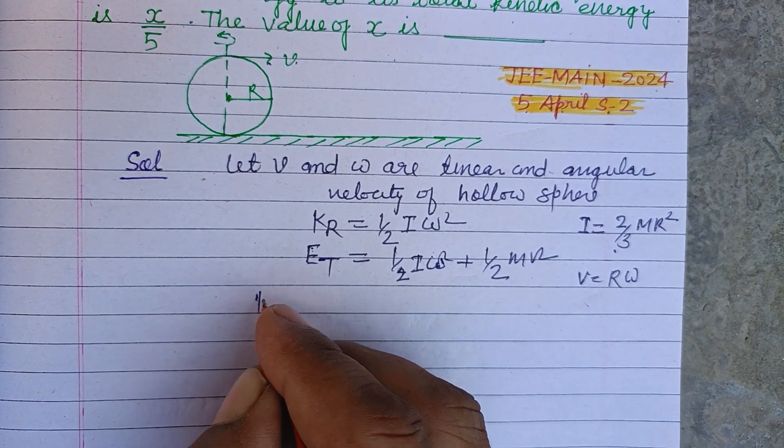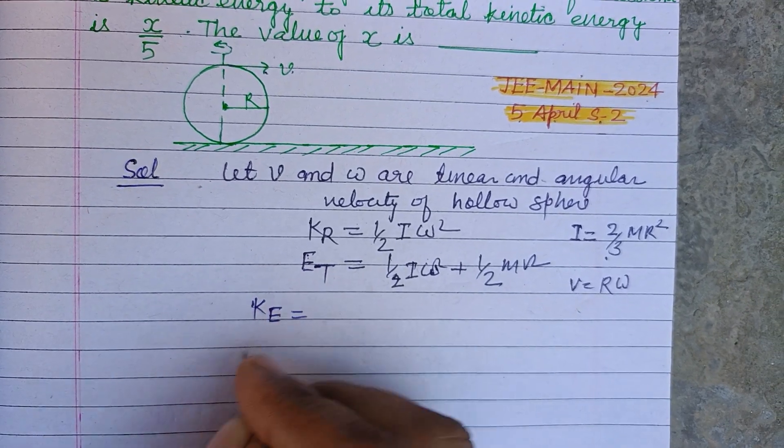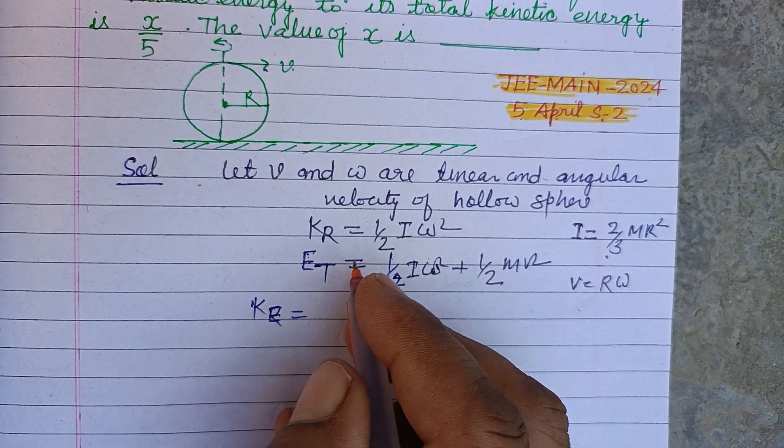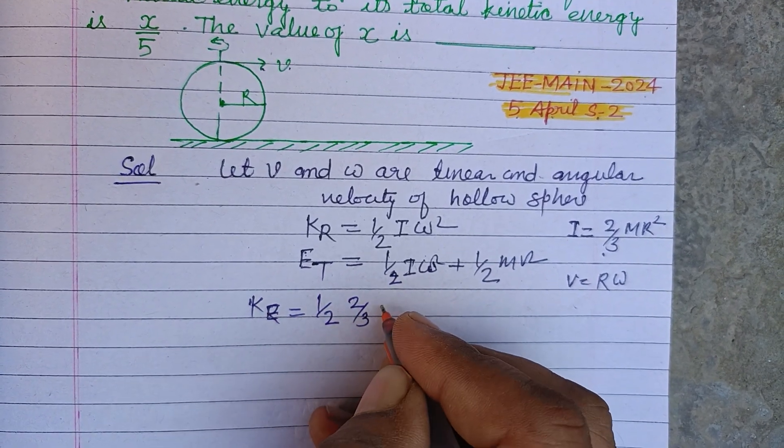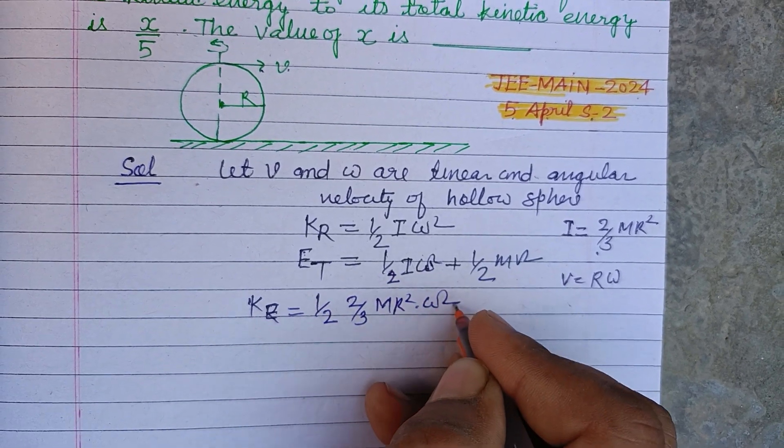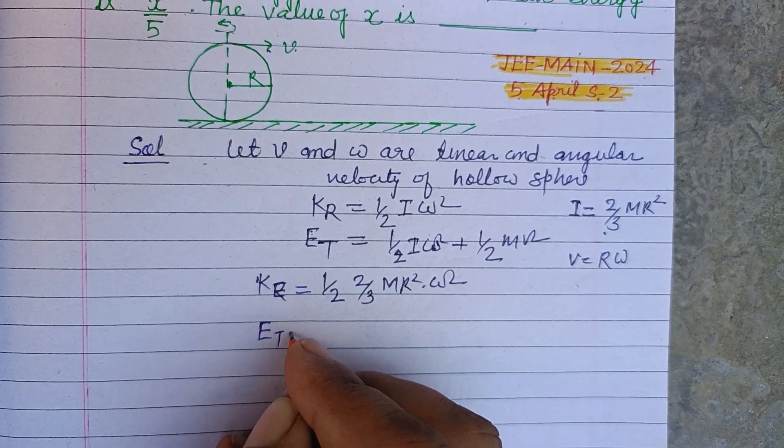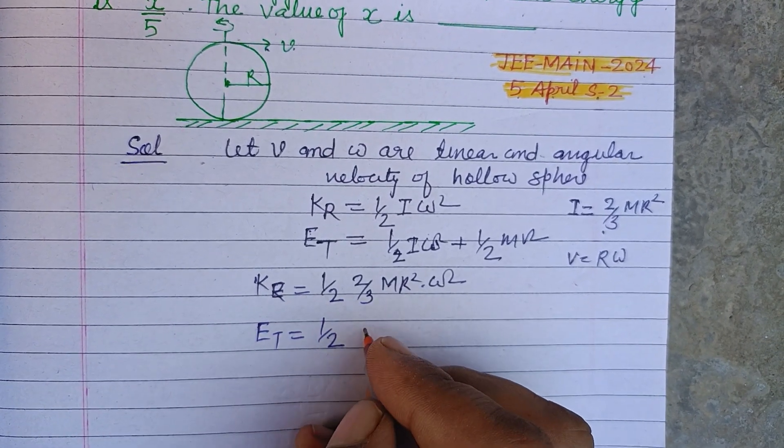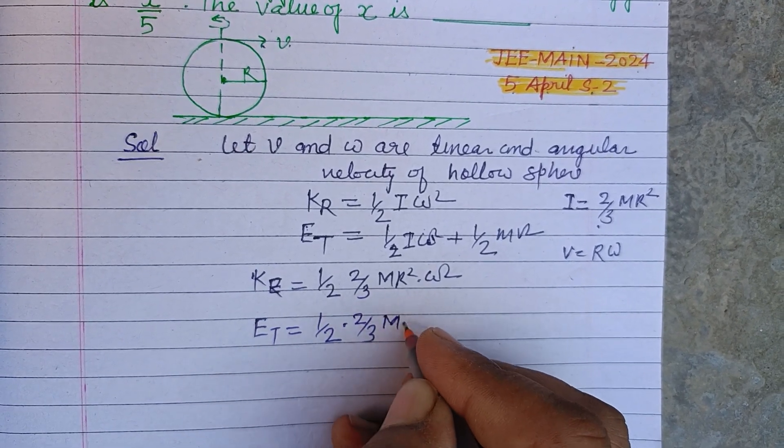Here kinetic energy, rotational kinetic energy K_R equals half I, which is 2 by 3 m r squared, into omega squared. And total energy equals half I omega squared, half into 2 by 3 m r squared.